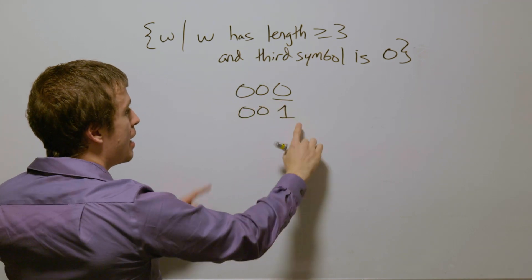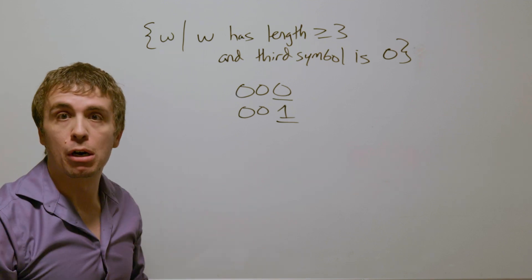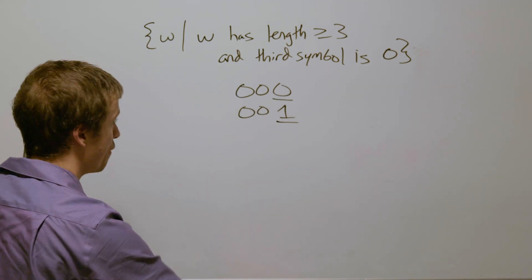If we have 001, it has length at least three, but its third symbol is not zero, and therefore will not be accepted by the DFA.